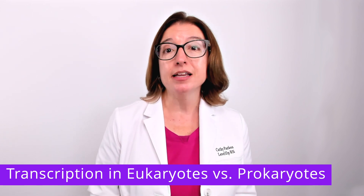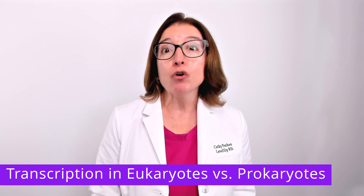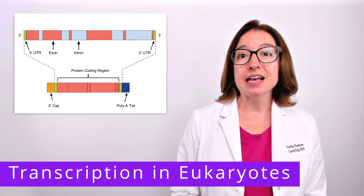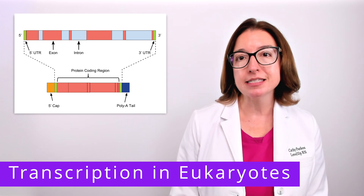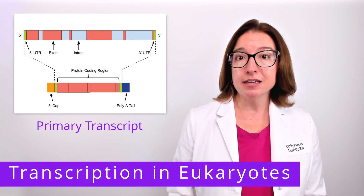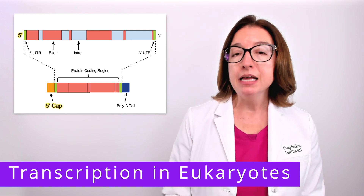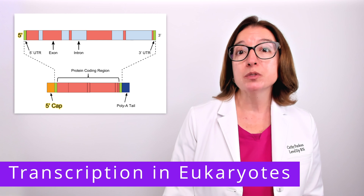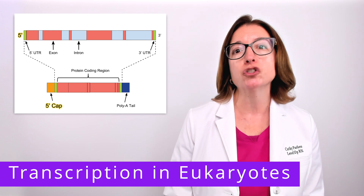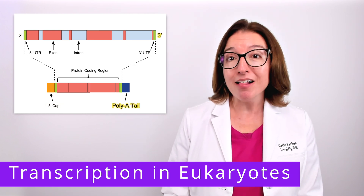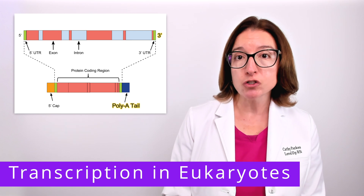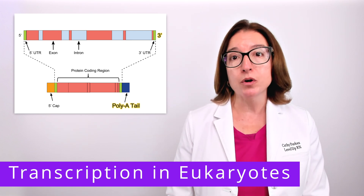In addition, the mRNA strand in a eukaryotic cell must undergo several processing steps before it can be translated. The mRNA strand synthesized by RNA polymerase in the nucleus of a eukaryotic cell is referred to as the primary transcript, which then undergoes processing. As part of this processing, a special nucleotide called a 5' cap is added to the 5' end of the transcript. This helps to prevent degradation of the transcript and also helps the ribosome bind to the mRNA molecule during translation. In addition, a poly-A tail is added to the 3' end of the transcript. This poly-A tail also helps to prevent degradation of the transcript and signals that the transcript is ready to be exported to the cytoplasm.